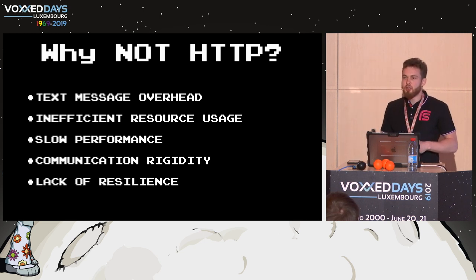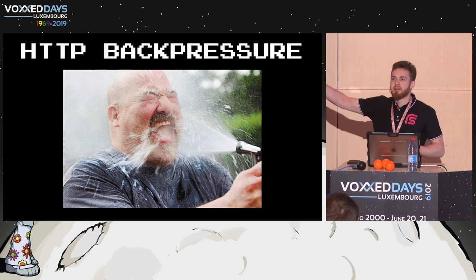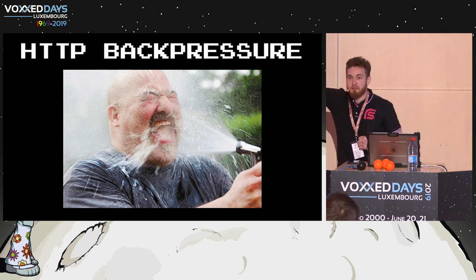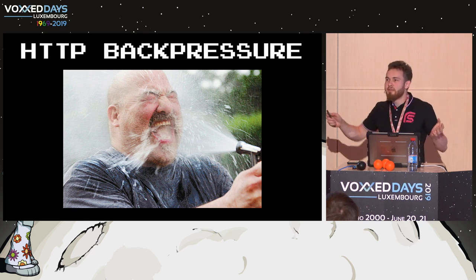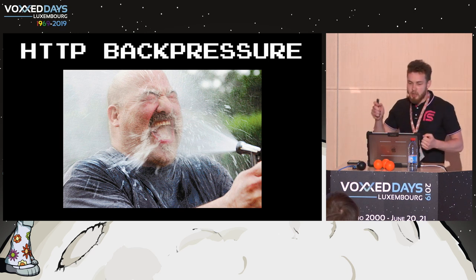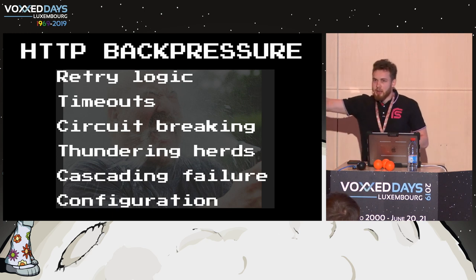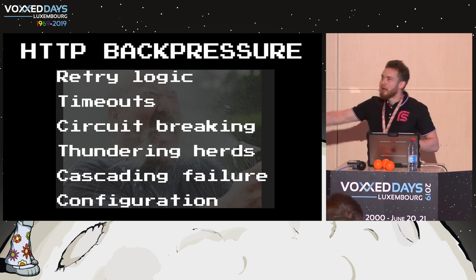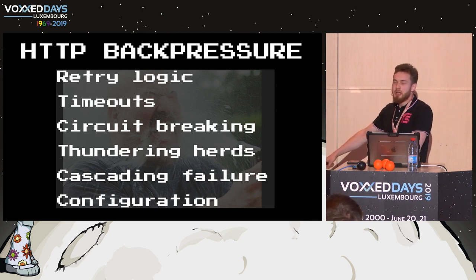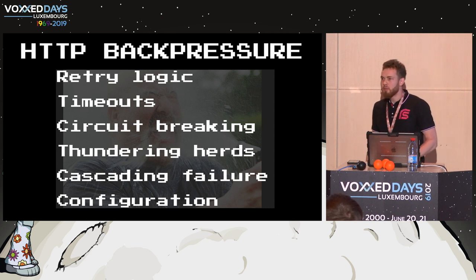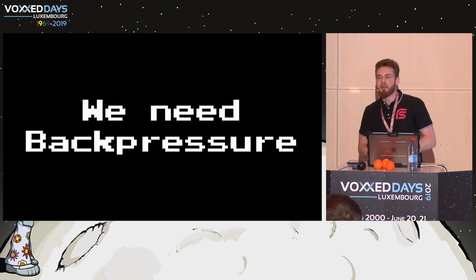HTTP doesn't have proper resilience. If we look at flow control with HTTP, the client just sends, sends, sends data until our server dies from the stream - there's no option to control it. To make our server and client stable, we have to implement retry logic, handle timeouts because requests could last too long, and provide a circuit breaker in case our server dies. We have to solve lots and lots of problems which maybe we shouldn't have to solve today. It's clear that we need backpressure.